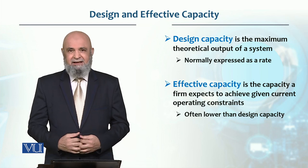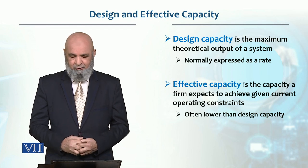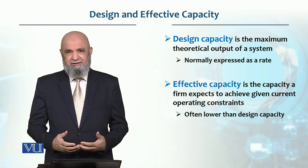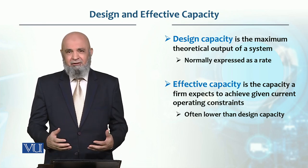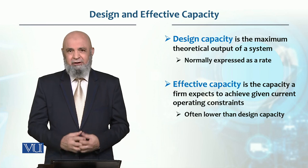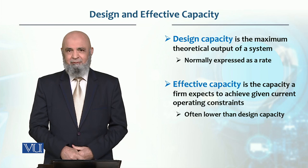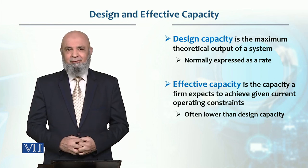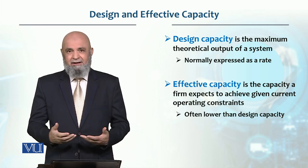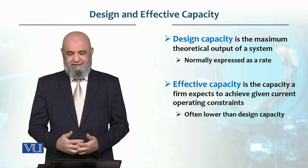Whereas effective capacity is basically what a firm expects to achieve given the operating constraints. Because in a factory, different constraints are operating — within those constraints, the same equipment whose design capacity was determined in a controlled environment now operates in a factory environment. That capacity is called effective capacity, and for obvious reasons, it is usually less than the design capacity.